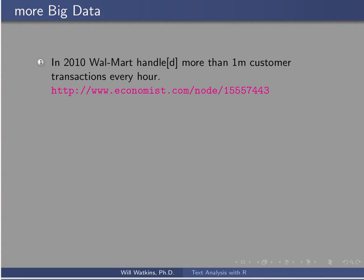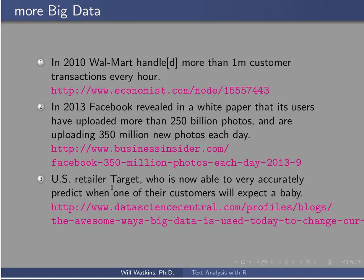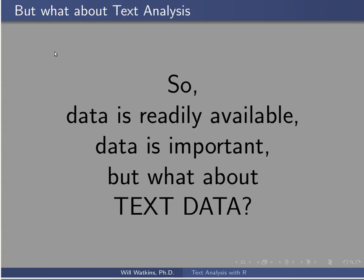There are lots of other places where big data is accumulated. Walmart handles a million customer transactions every hour. Facebook has more people on it than the entire population of China, with enormous numbers of photos being uploaded. The US retailer Target is now able to very accurately predict when one of their customers will expect a baby based on transaction data. So data is readily available and data is important.